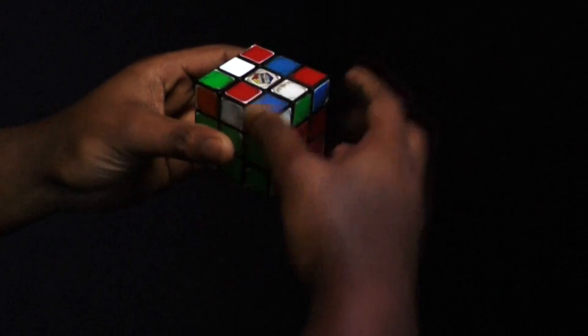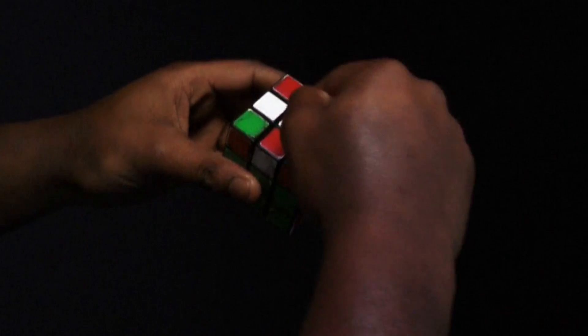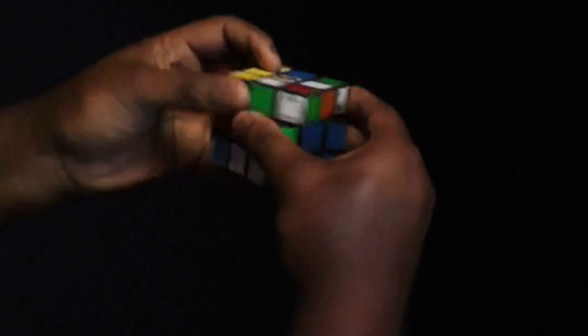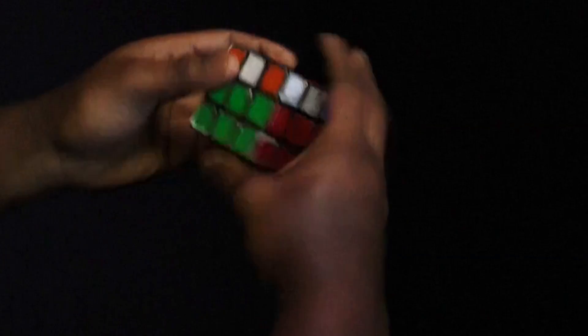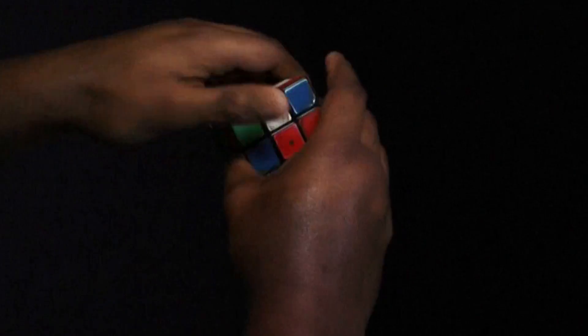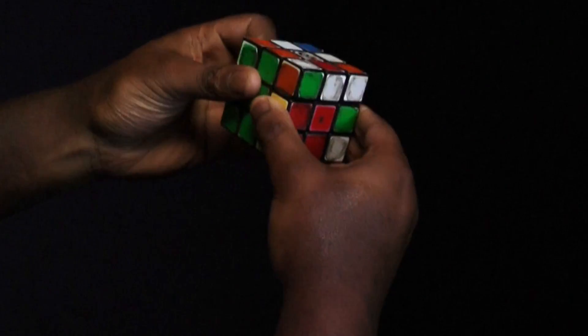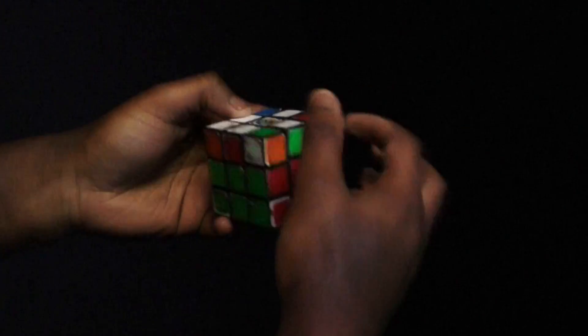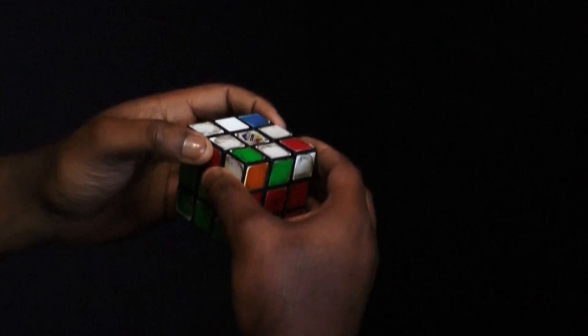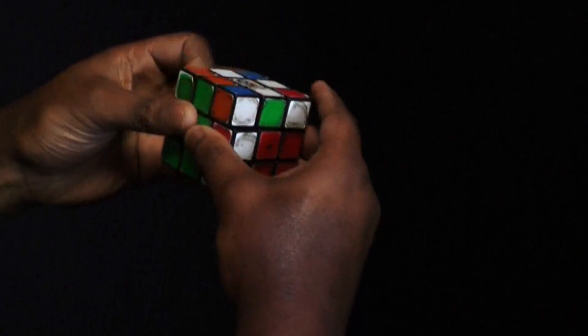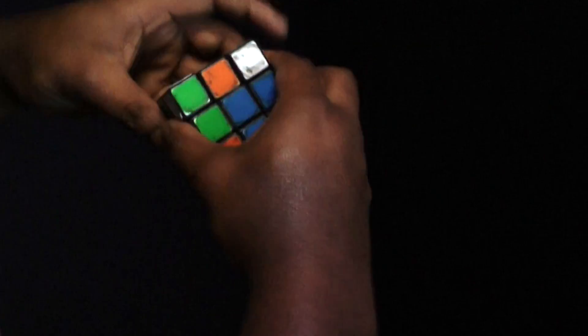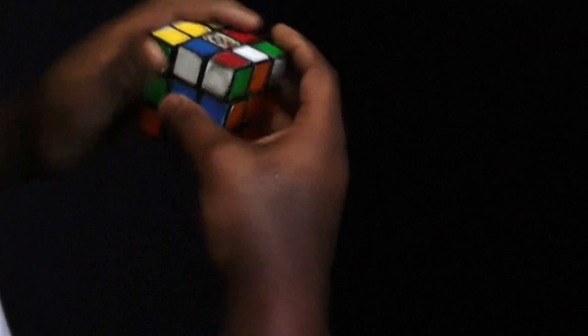Now we need to do this. We need the cross again. You will either have a line, or a V, or a full cross. If you've got the V, you need to do F, U, R, R', so U', R', F', to get that. Do the one with the Z. Sorry. Hang on. There.